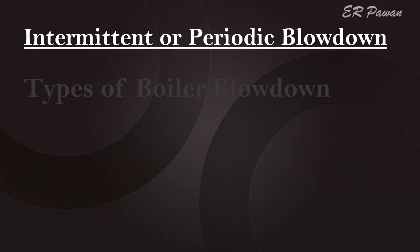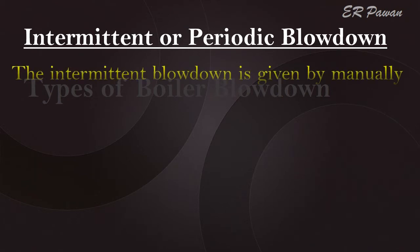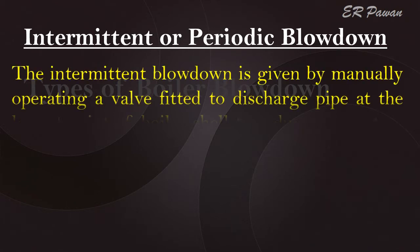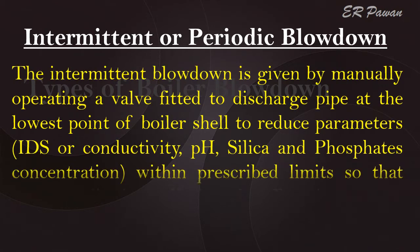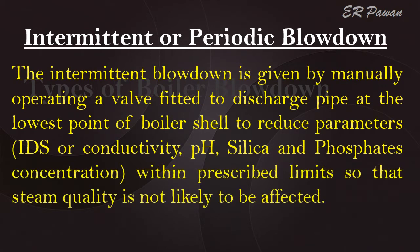Intermittent or periodic blowdown: The intermittent blowdown is given by manually operating a valve fitted to a discharge pipe at the lowest point of the boiler shell to reduce parameters — TDS or conductivity, pH, silica, and phosphate concentration — within prescribed limits so that steam quality is not likely to be affected.